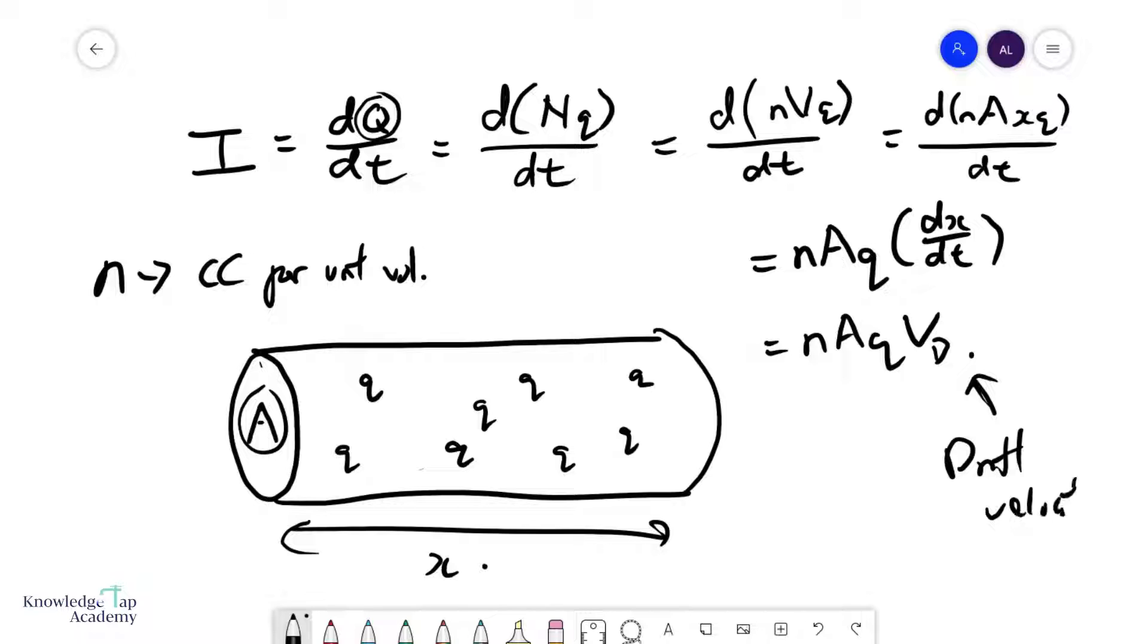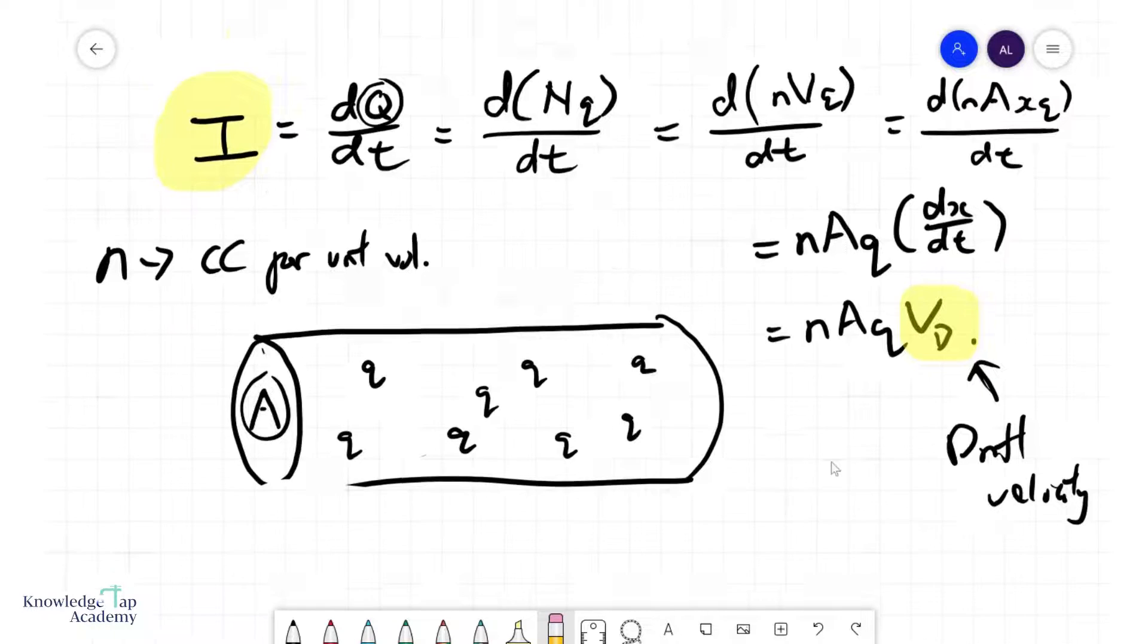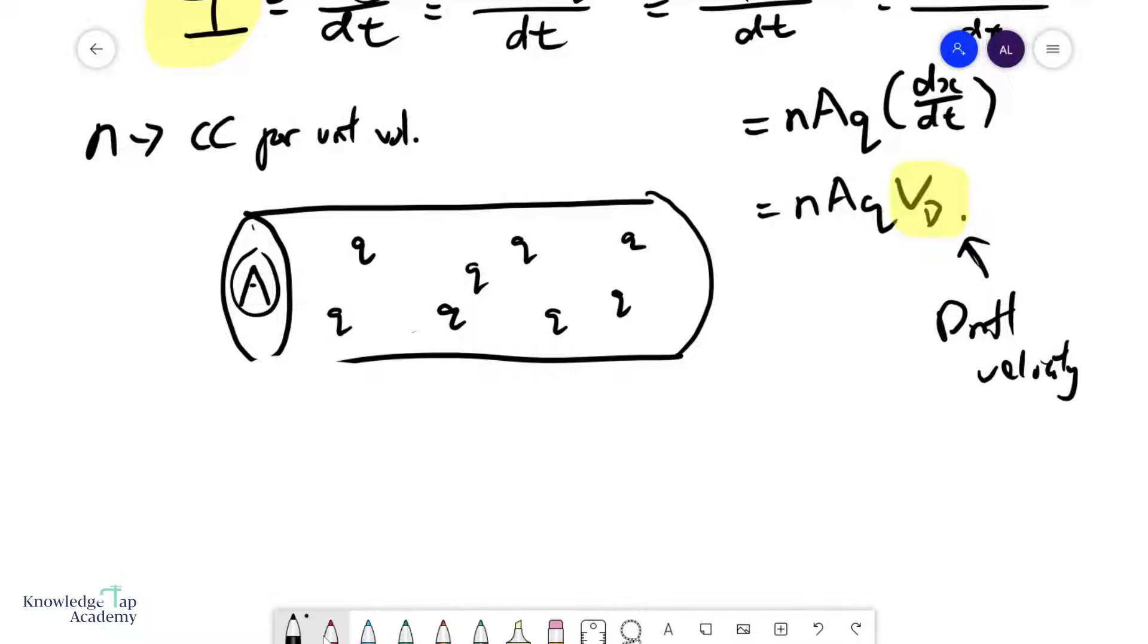And so, now what we have over here, we can see that the current affects this drift velocity. Now, what exactly is the drift velocity? Because x is defined in a direction parallel to this wire, then the velocity is also in the direction of the wire, or some would say in the direction of the current.